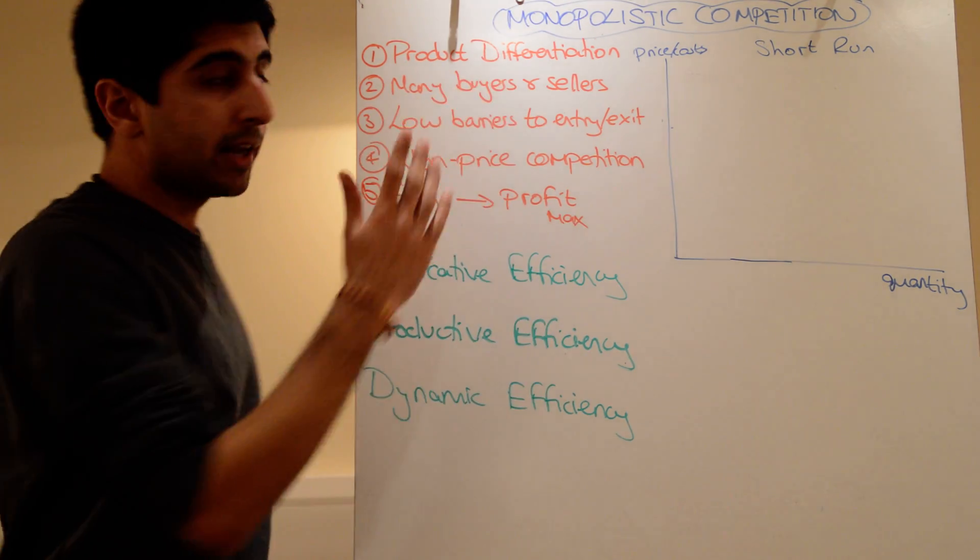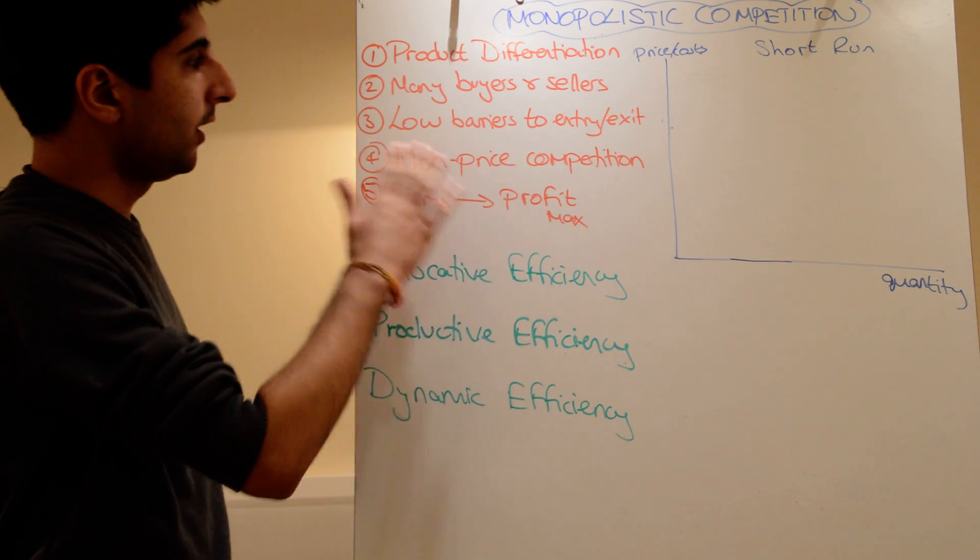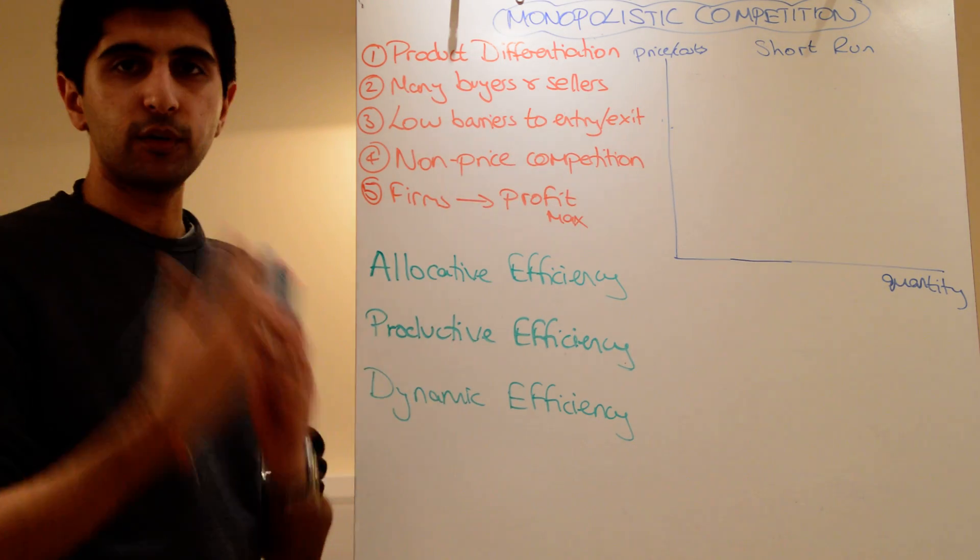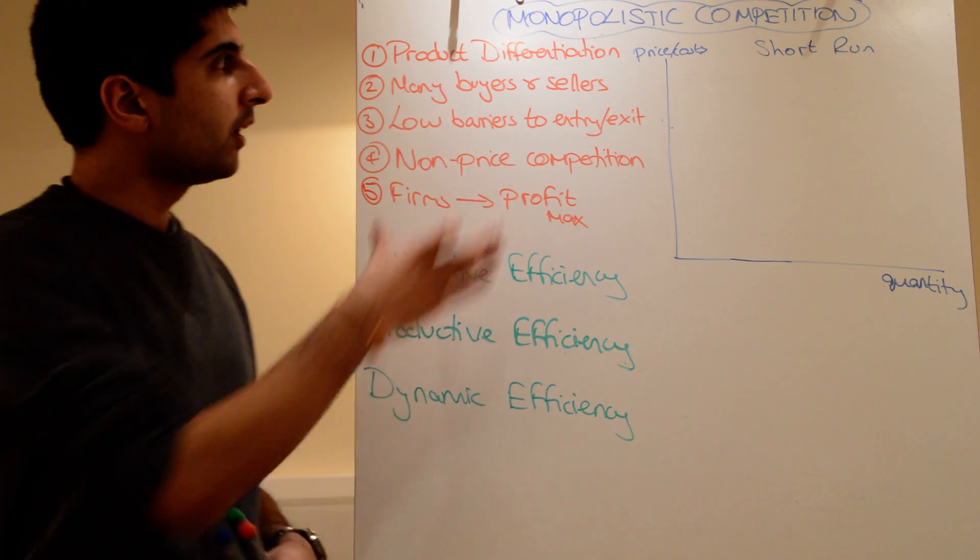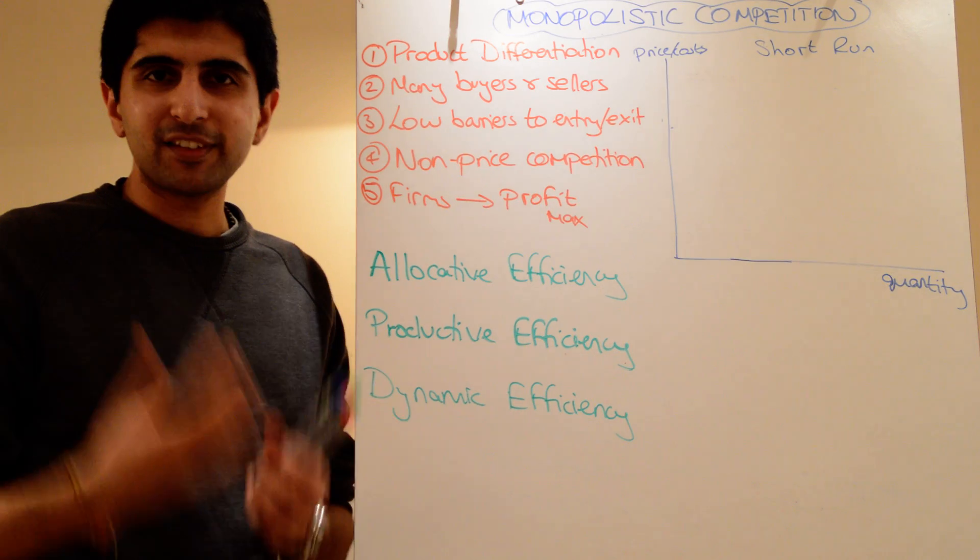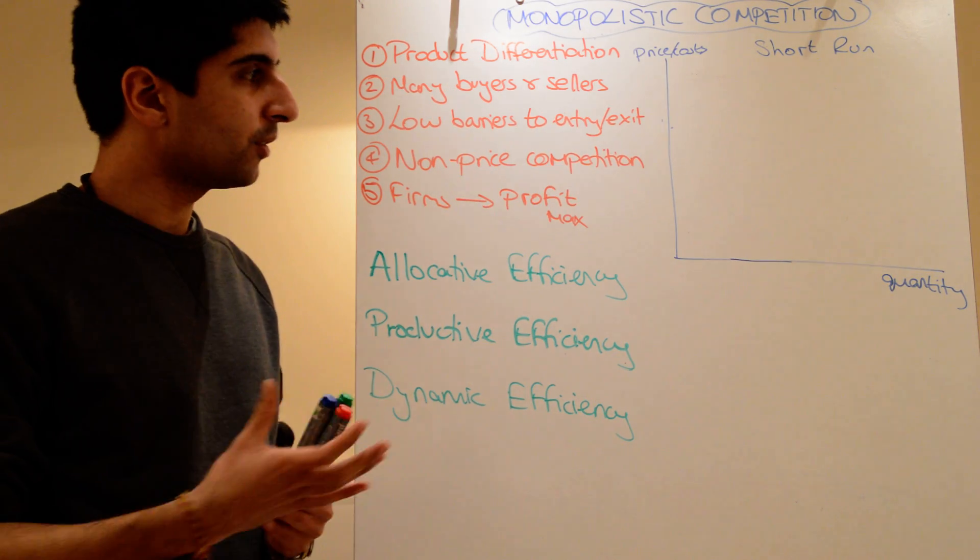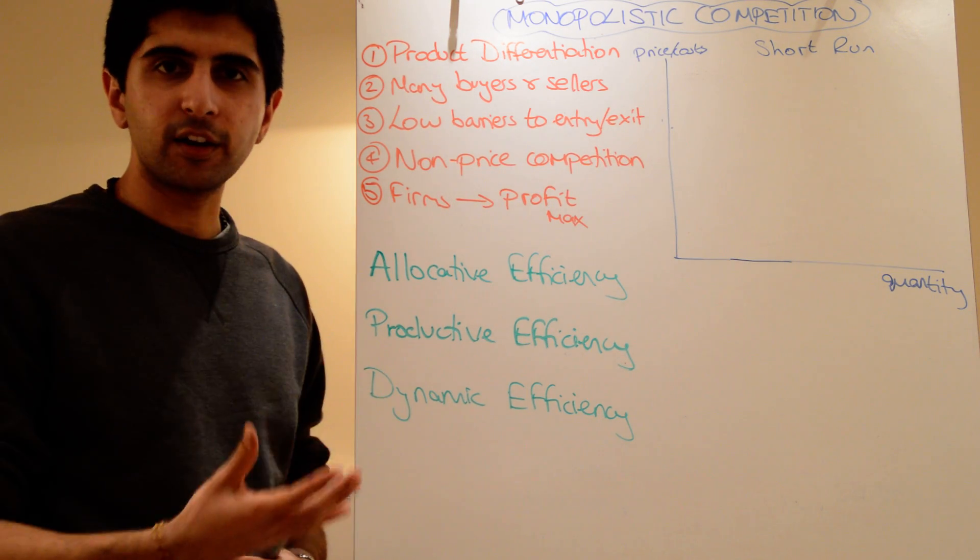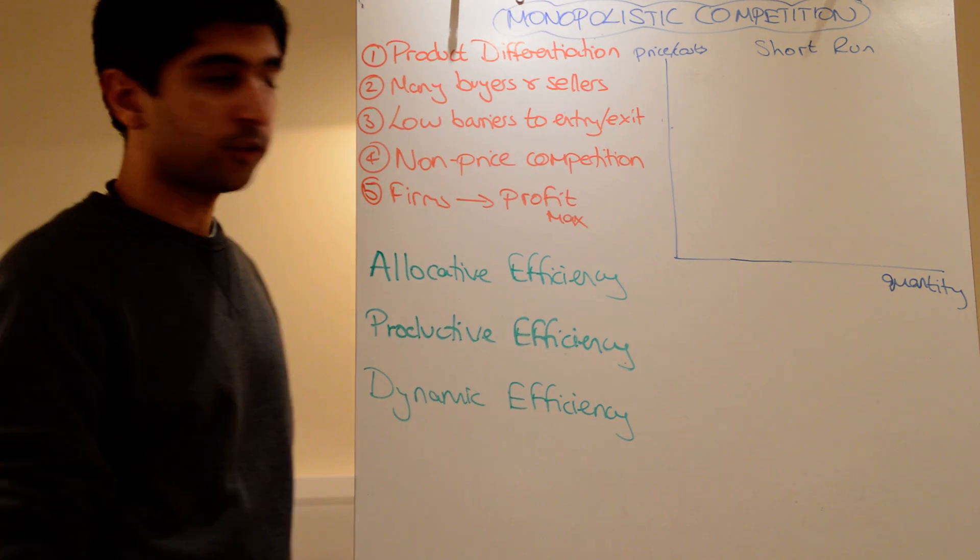You also then have many buyers and sellers that exist, so still many, many sellers. Low barriers to entry and exit, non-price competition, a lot of non-price competition. In order to maximize profits as much as possible, a lot of these firms try and build brands. They try and build their image, they try and advertise heavily, so you see a lot of non-price competition.